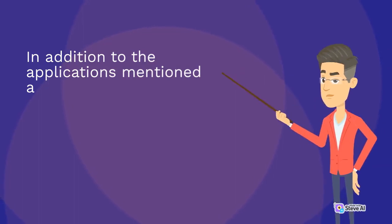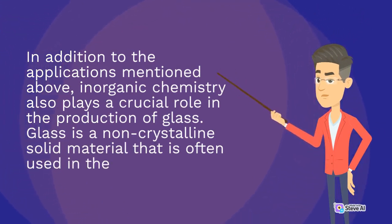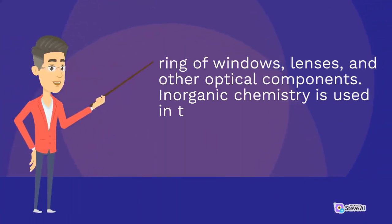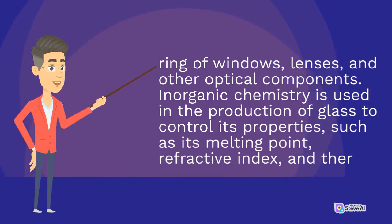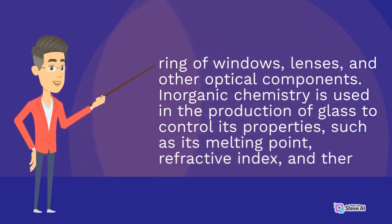In addition to the applications mentioned above, inorganic chemistry also plays a crucial role in the production of glass. Glass is a non-crystalline solid material that is often used in the making of windows, lenses, and other optical components. Inorganic chemistry is used in the production of glass to control its properties, such as its melting point, refractive index, and thermal expansion.